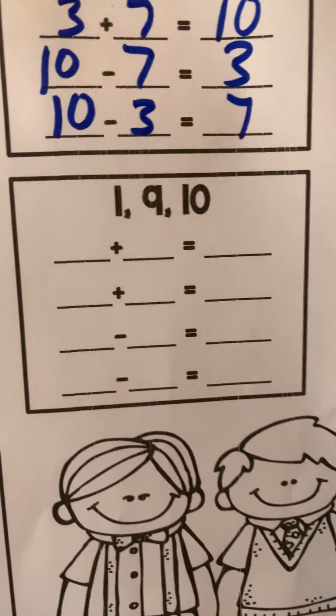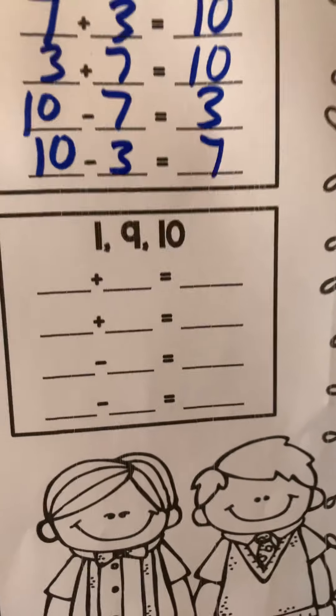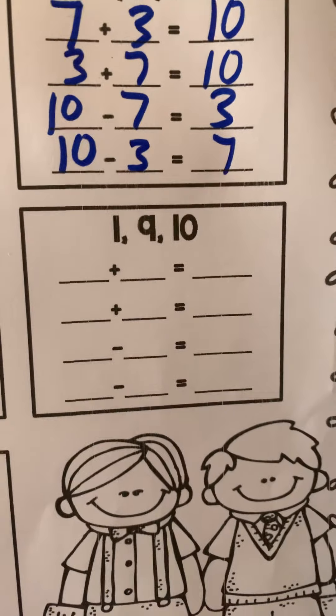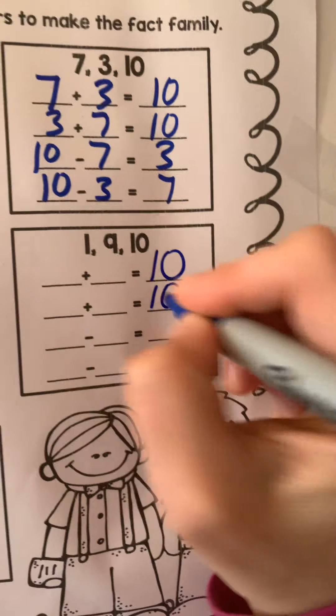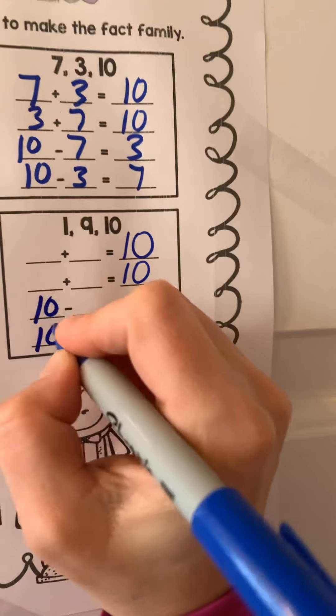Let's try the next one. We have 1, 9, 10. What do you think, Lucy? Addition ends with the biggest number. 10, 10. Subtraction starts with the biggest number, which is our 10.